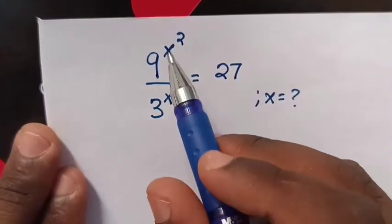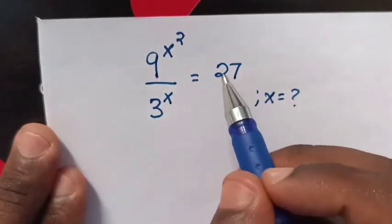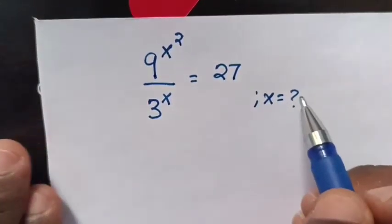How to solve this equation? 9 power x square over 3 power x equals 27. Find the value of x.